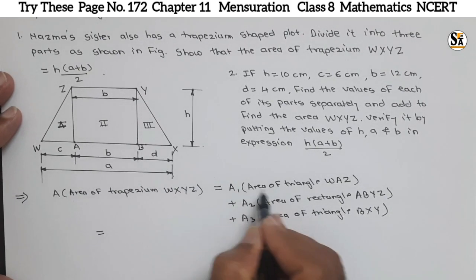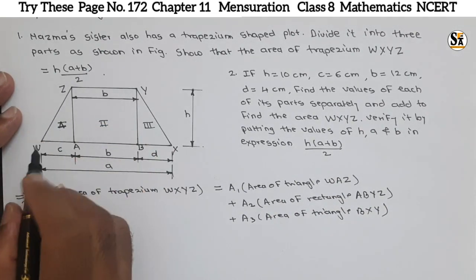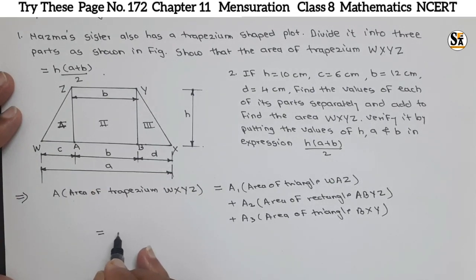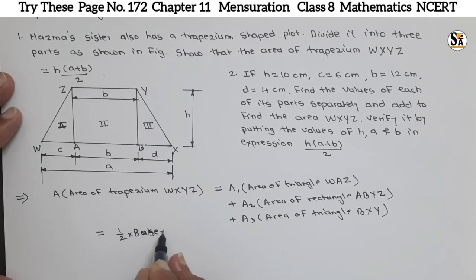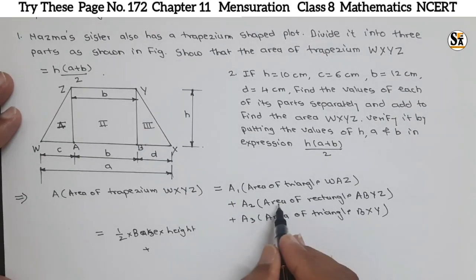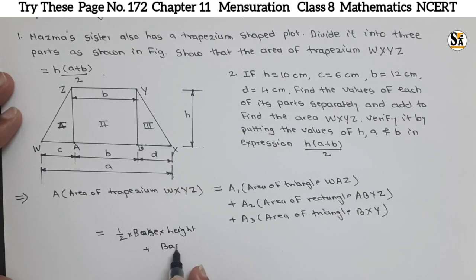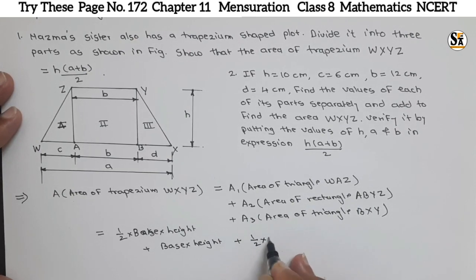For the area of triangle WAZ, the formula is 1/2 into base into height. Then, plus area of rectangle is base into height. Then plus area of this third triangle, which is again 1/2 into base into height.